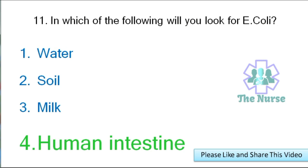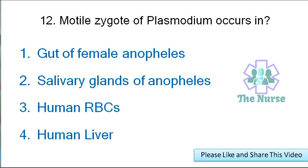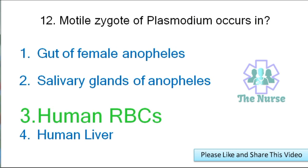Next question: Motile zygote of Plasmodium occurs in — gut of female Anopheles, salivary glands of Anopheles, human RBCs, or human liver? Correct answer: in human RBCs.